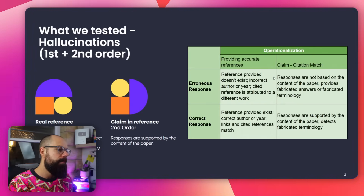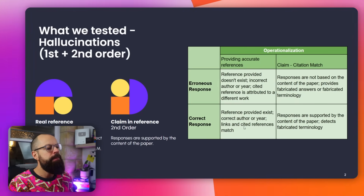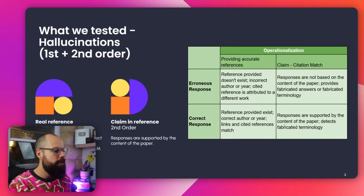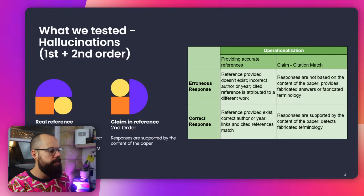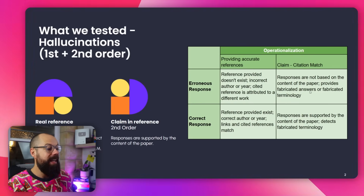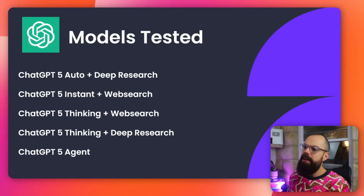This is the matrix we used. Does it provide accurate references? A correct response means the reference exists — yes, we like that. Then the claim citation match: is the claim in the paper that it's being cited for? We want responses supported by the content of the paper, and we don't want responses that reference something not actually in there. Remember, a large language model is like a prediction machine and it sometimes just makes stuff up to make you happy.